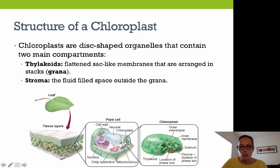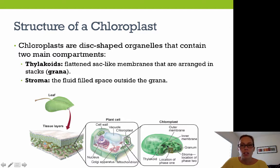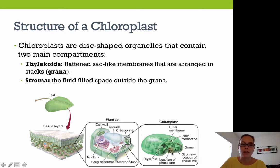Make sure you know this diagram. The chloroplast is made up of an outer membrane and an inner membrane. Within the inner membrane is the stroma, where the light-independent reactions take place. There are stacks called grana, made up of membranes called thylakoids, and the thylakoid membrane is where the light-dependent reactions take place.